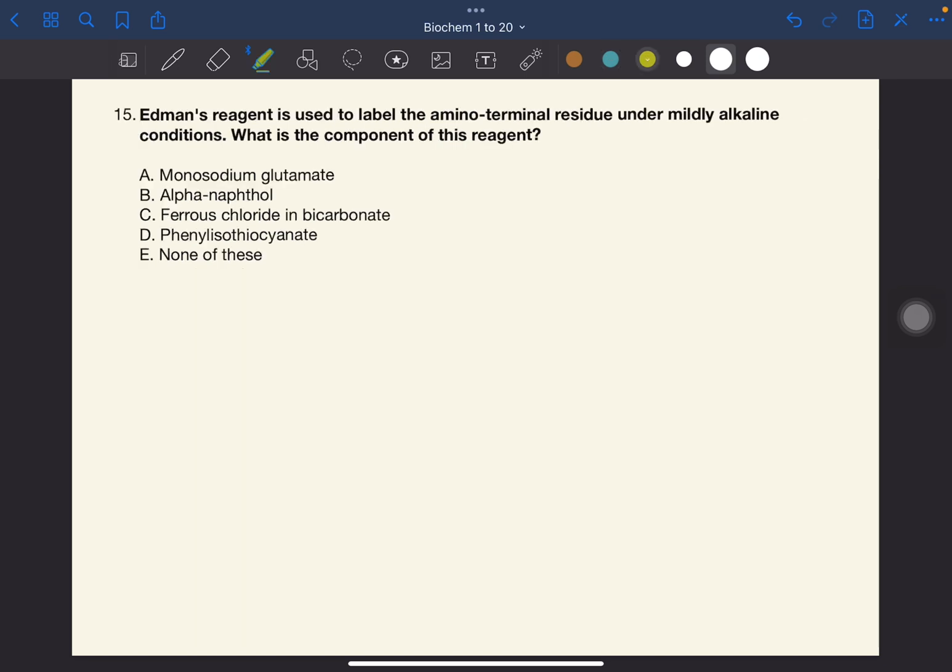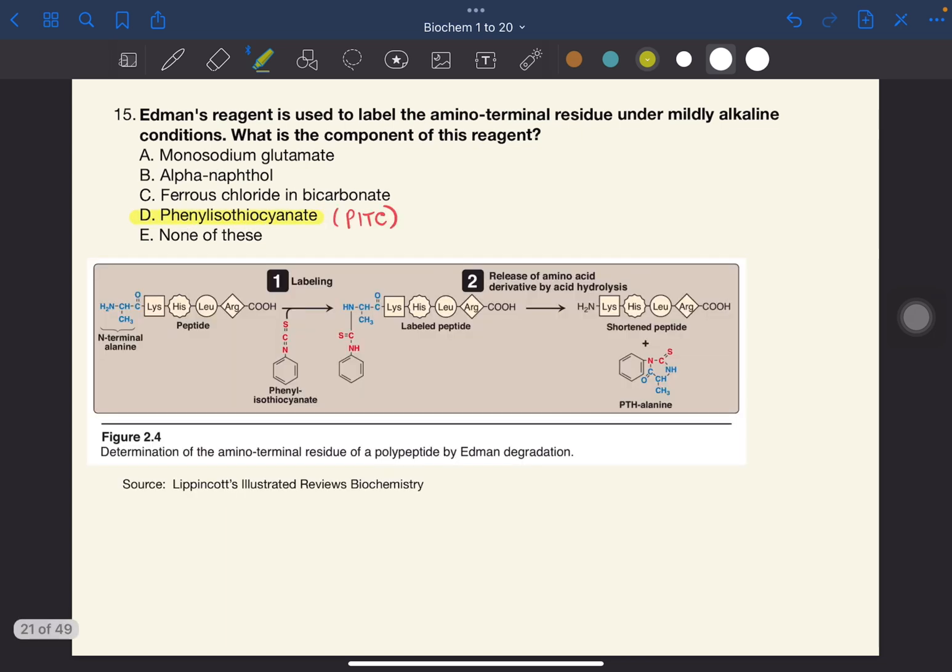Number 15. Edmond's reagent is used to label the amino terminal residue under mildly alkaline conditions. What is the component of this reagent? The answer to this one is D, phenylisothiocyanate. What happens during Edmond's degradation?